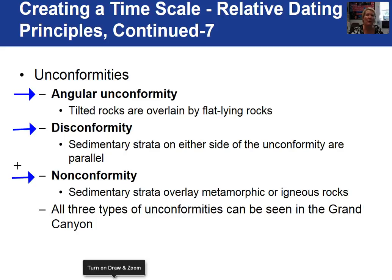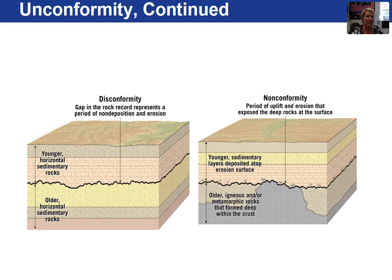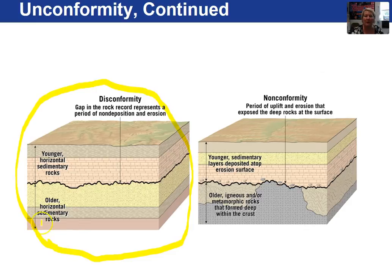All three of these unconformities can be seen in the Grand Canyon. In this first figure, the image is showing what we call a disconformity. We have horizontal layers of sedimentary rock, the unconformity — just an erosional surface — followed by additional flat-lying horizontal rocks.